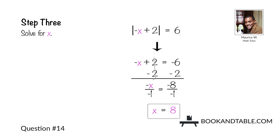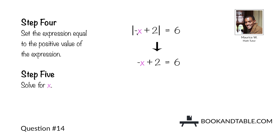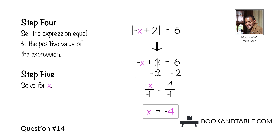We solve for the second answer by changing the expression to the positive value, since the expression inside the absolute value sign can be negative or positive. So negative x plus 2 is equal to positive 6. Subtract 2 from both sides, leaving us with 6 minus 2, which is 4. Remove the negative from in front of x by dividing both sides by negative 1, leaving us with x is equal to 4 divided by negative 1, which is negative 4.